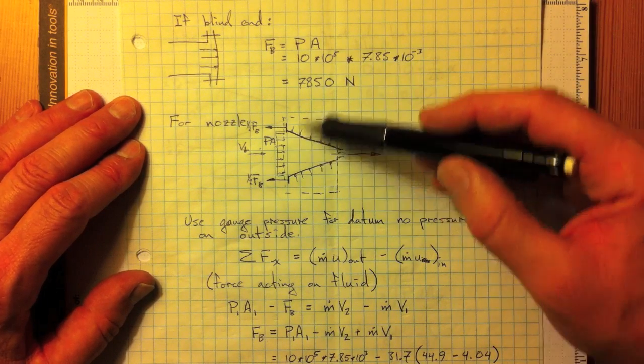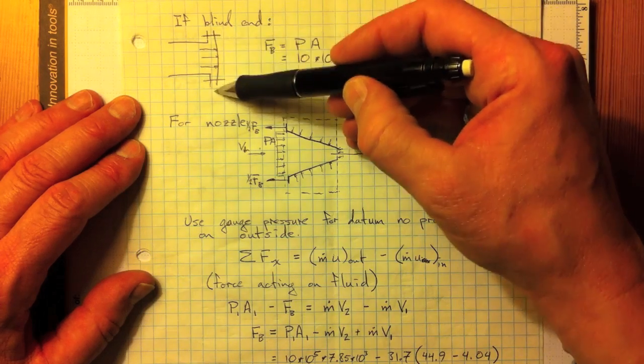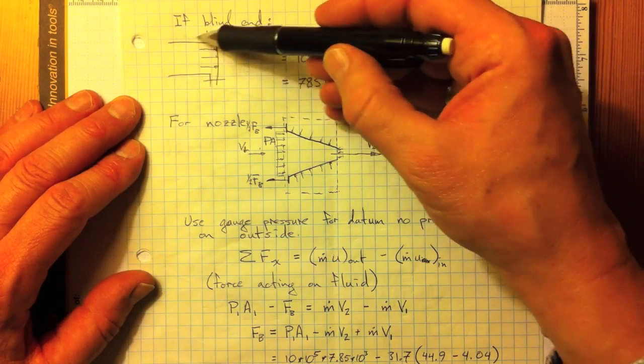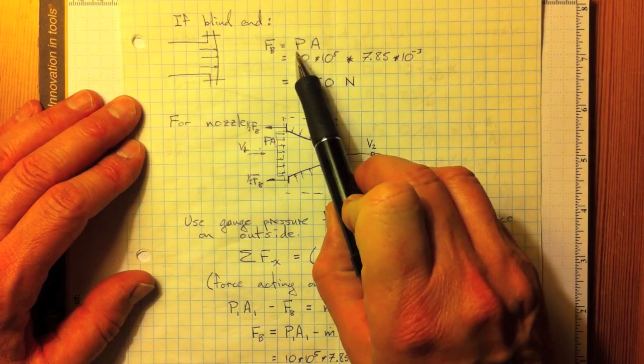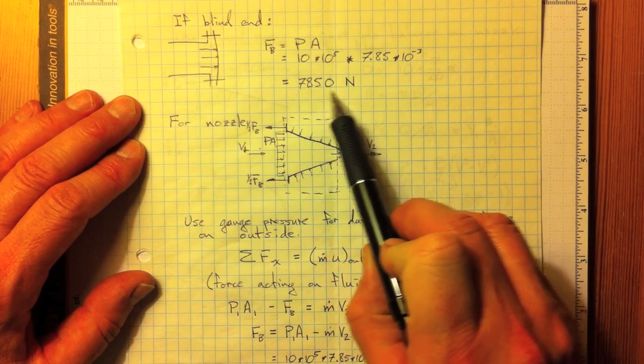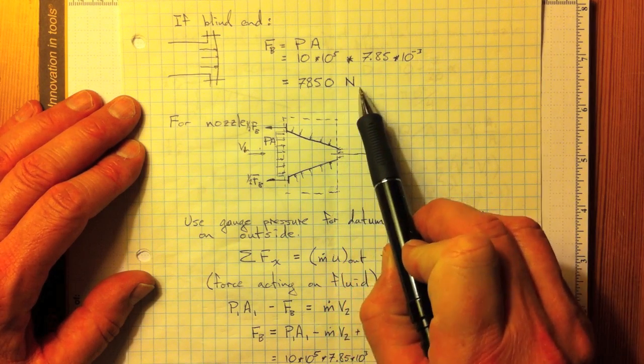So, if instead of having a nozzle on there, we just had a blind end on the flange there, we'd find that the force in the bolts would be pressure times area, or 7850 newtons.